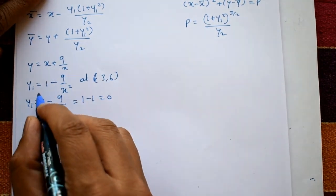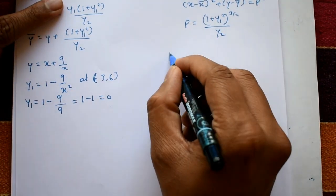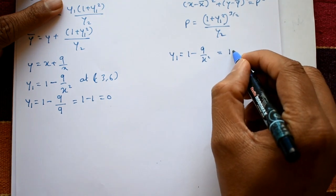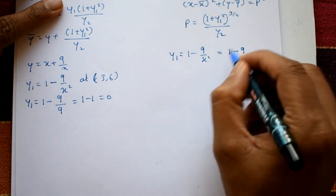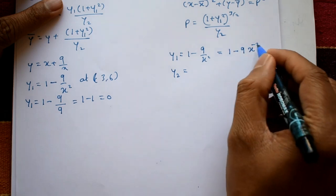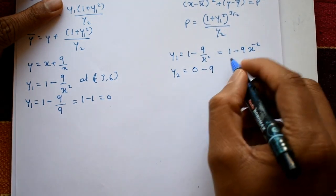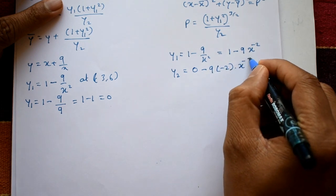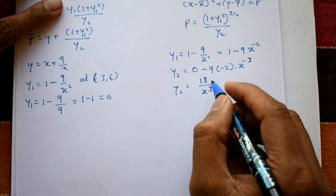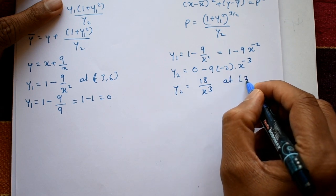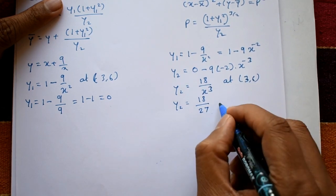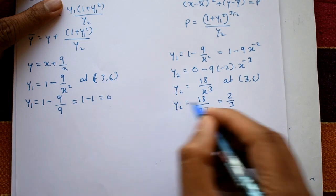Next we need y2. Consider y1 = 1 − 9x^(−2). Differentiating again: y2 = 0 − 9·(−2)x^(−3) = 18/x³. At the point (3, 6), y2 = 18/3³ = 18/27 = 2/3. So y1 = 0 and y2 = 2/3.